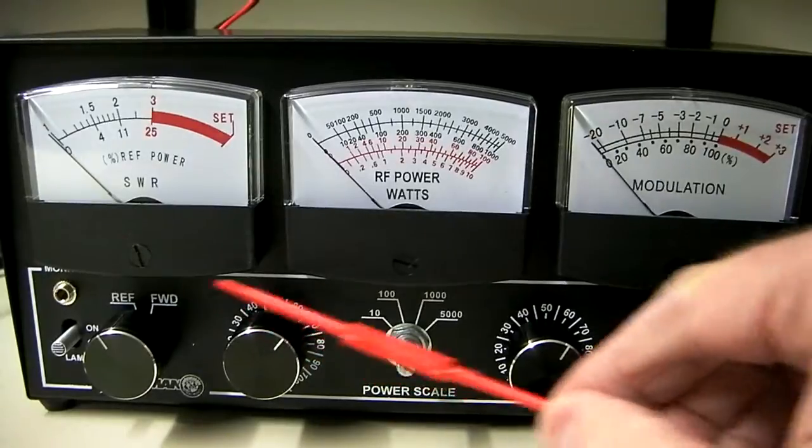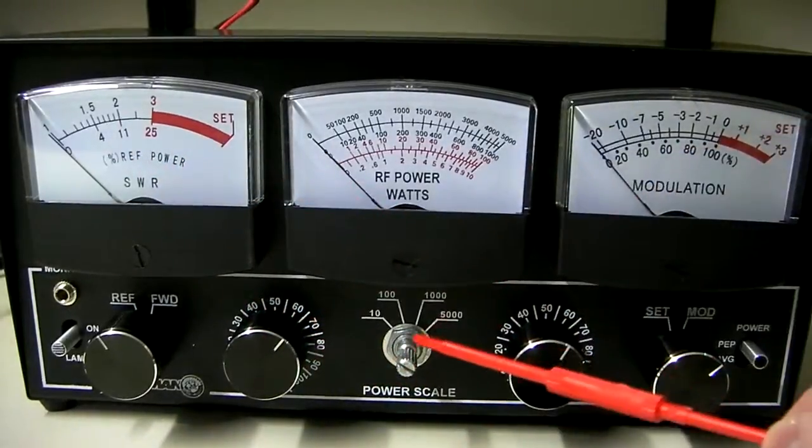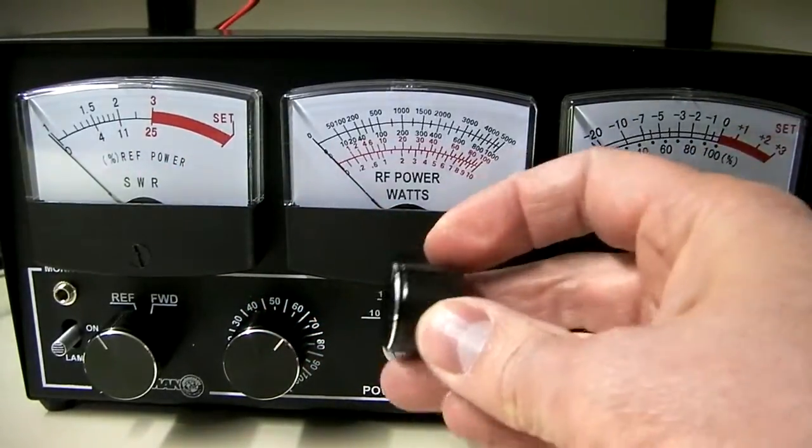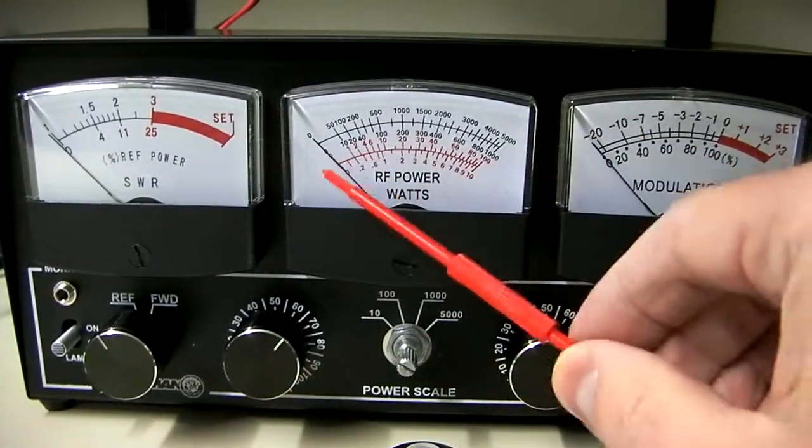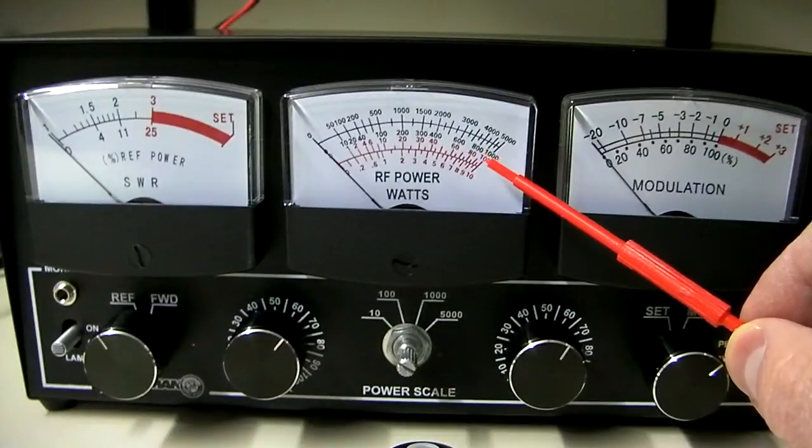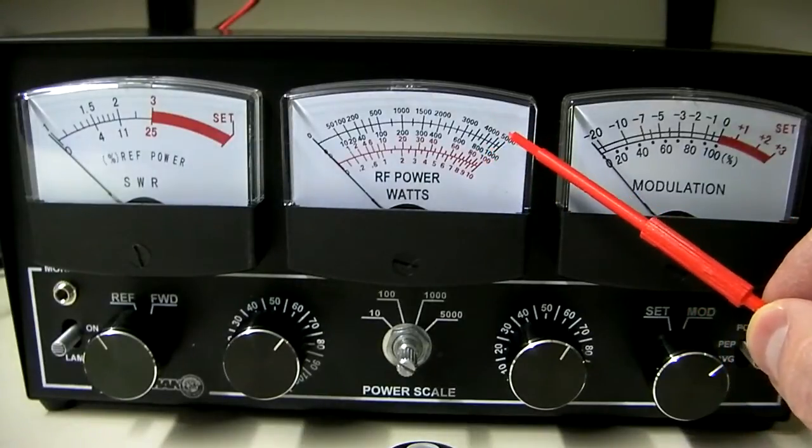It's got adjustment here to adjust for your SWR. This is your power scale adjustment. This is the knob for that. I'll discuss that in a second. That's to set the different scales. There's a 10 watt, 100 watt, 1,000 watt, 5,000 watt scale there.